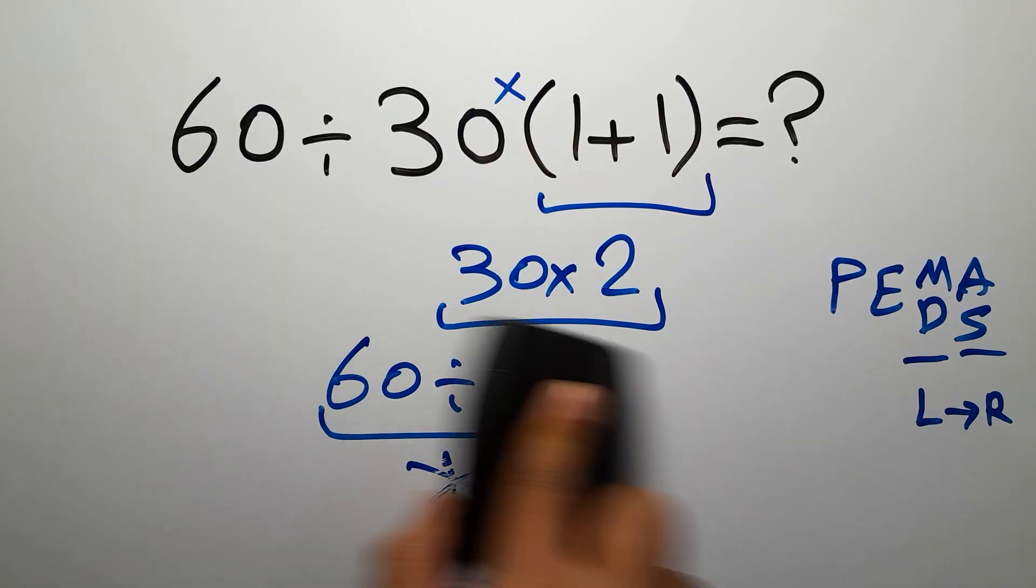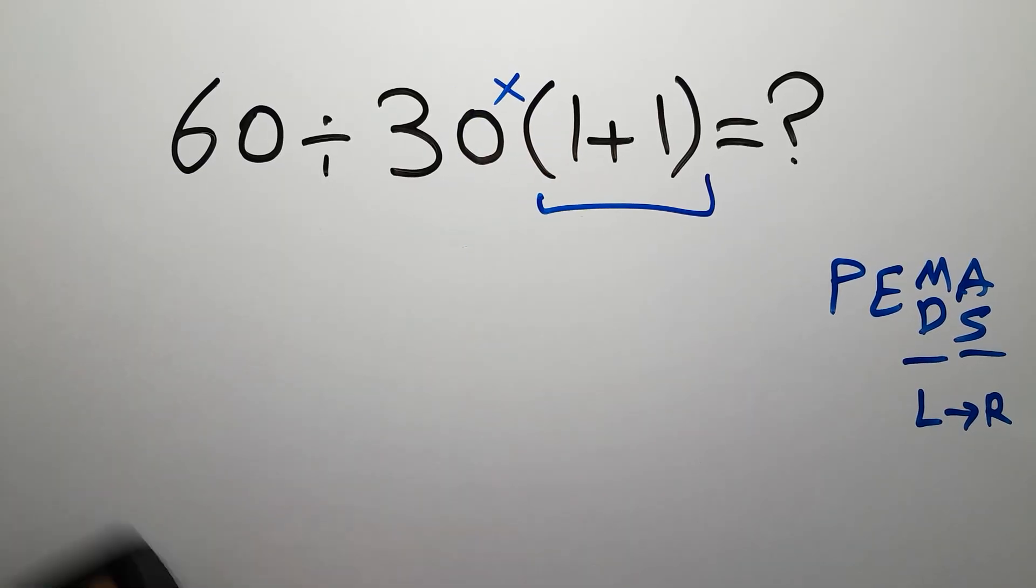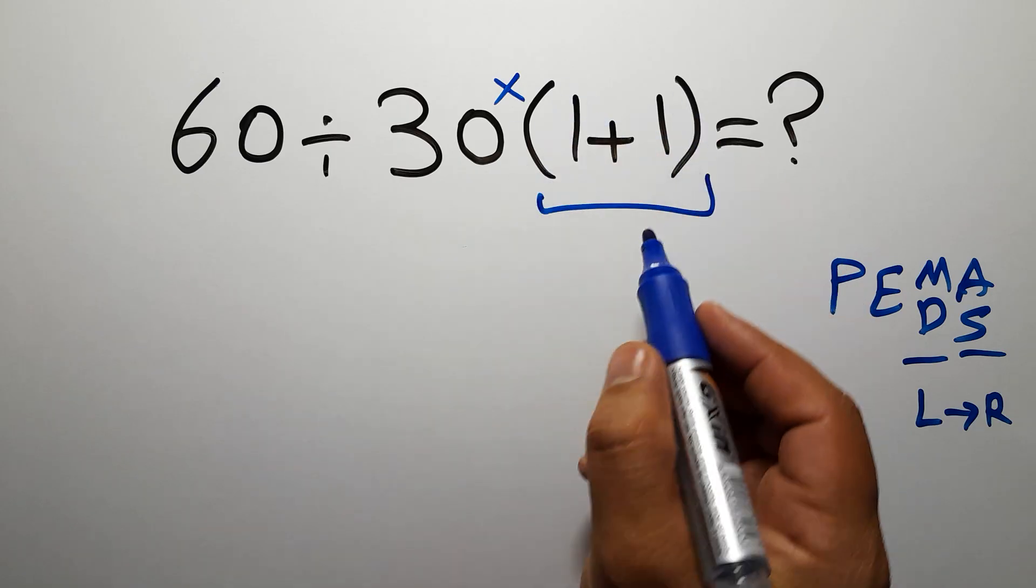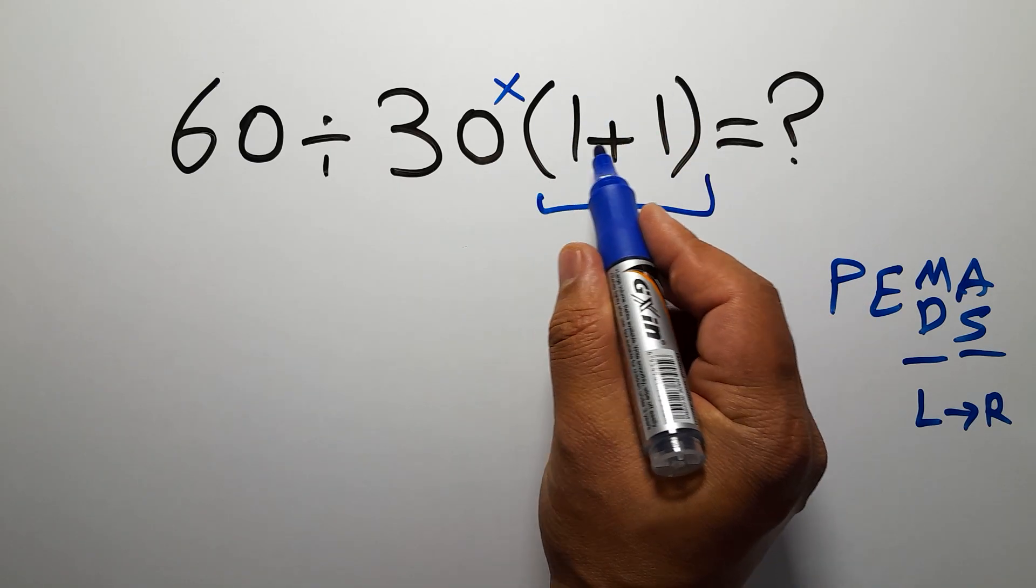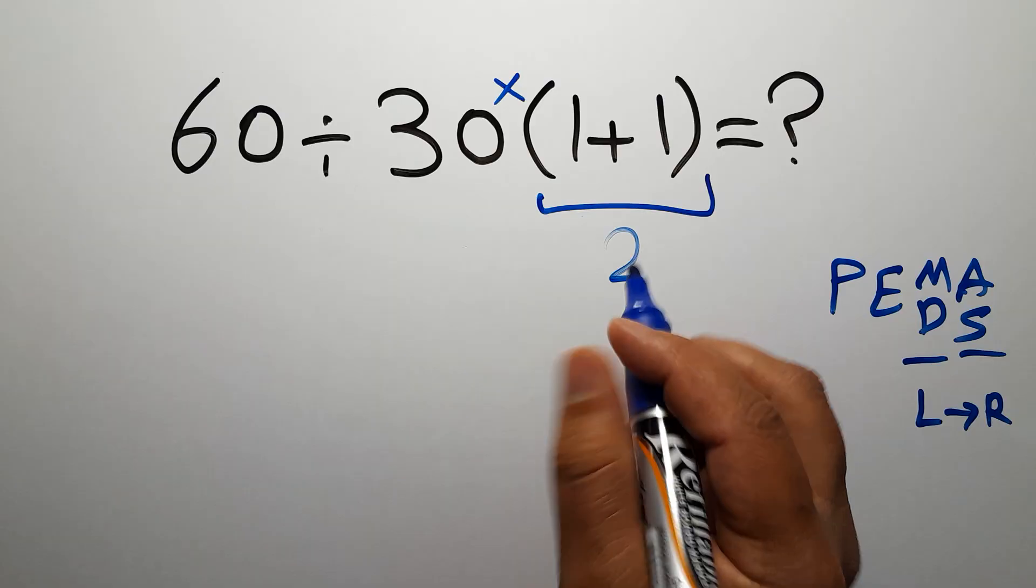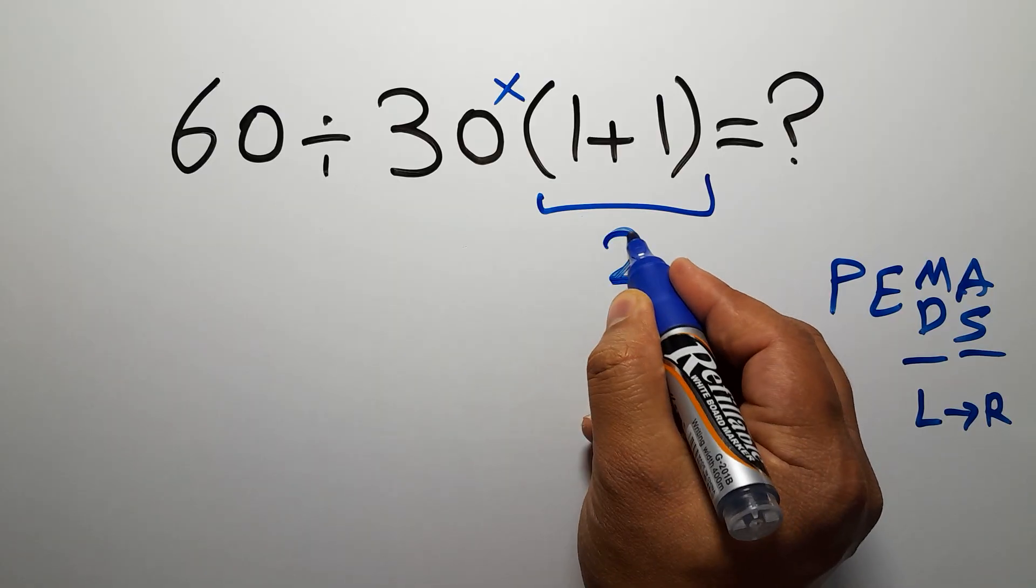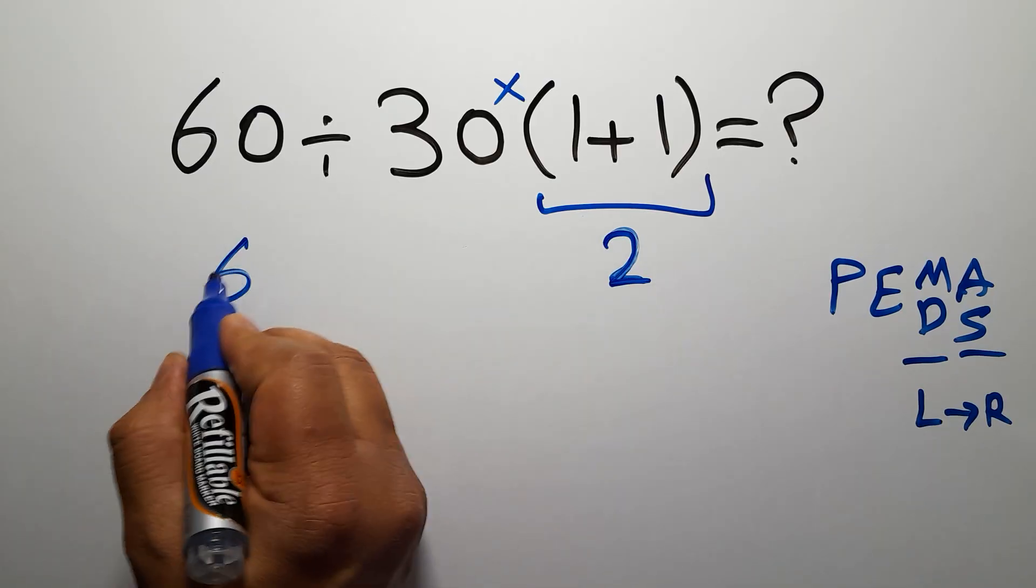Okay, so first the parentheses. Inside these parentheses we have 1 plus 1 which equals 2, so we have 60 divided by 30 times 2.